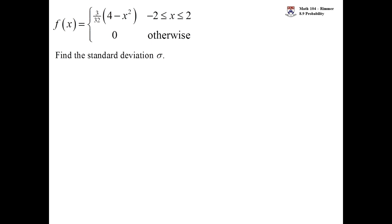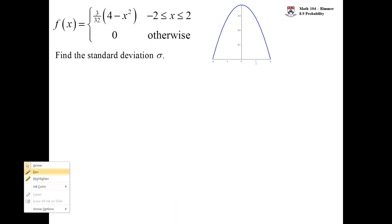The graph of this function isn't necessary to find the standard deviation, I just want you to see what it looks like. The function is 0 so long as you are away from the interval from -2 to 2. So the function is 0 more than 2, 0 less than -2. But between -2 and 2, it becomes alive. It becomes this parabola that opens down. And it's our job to find the standard deviation.